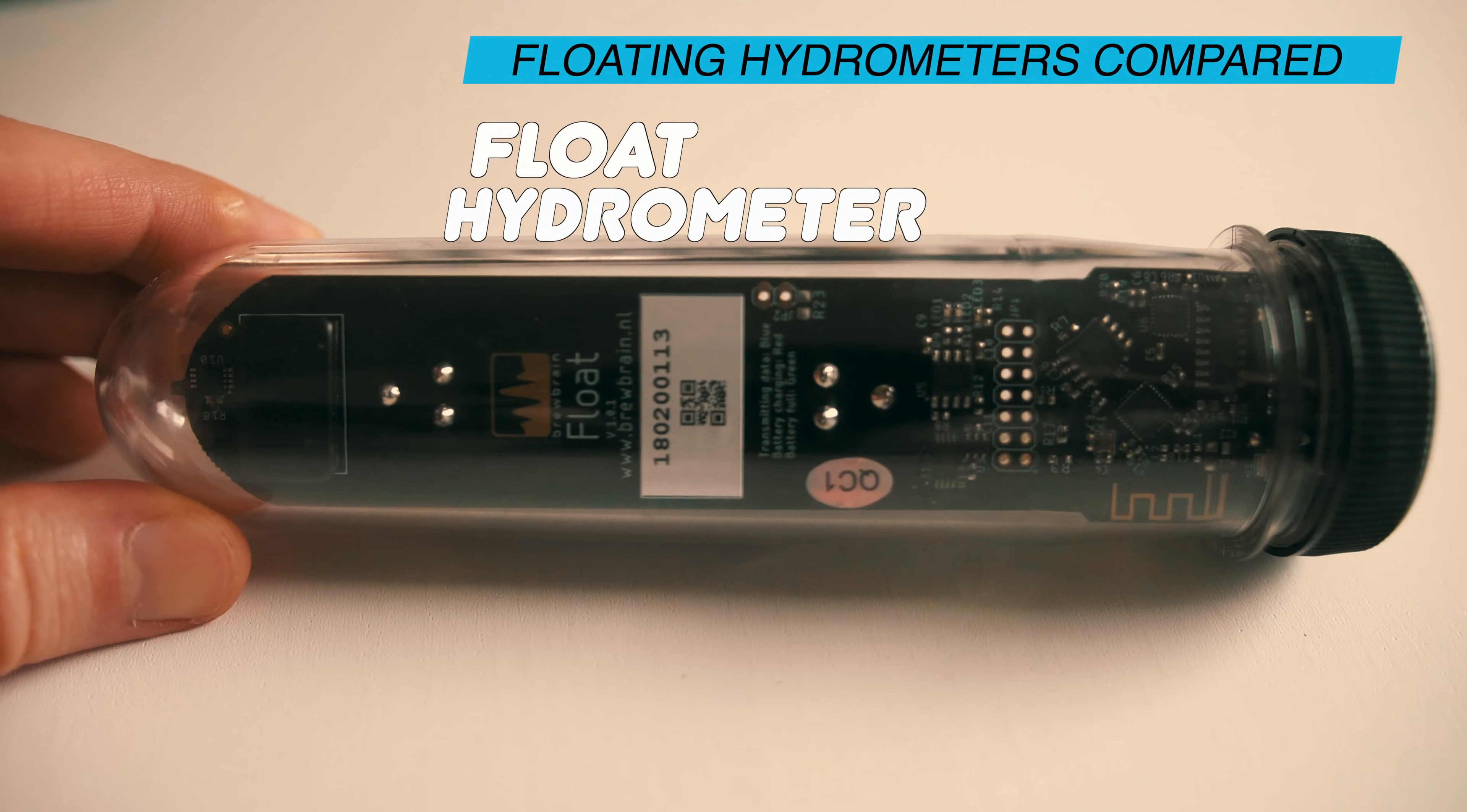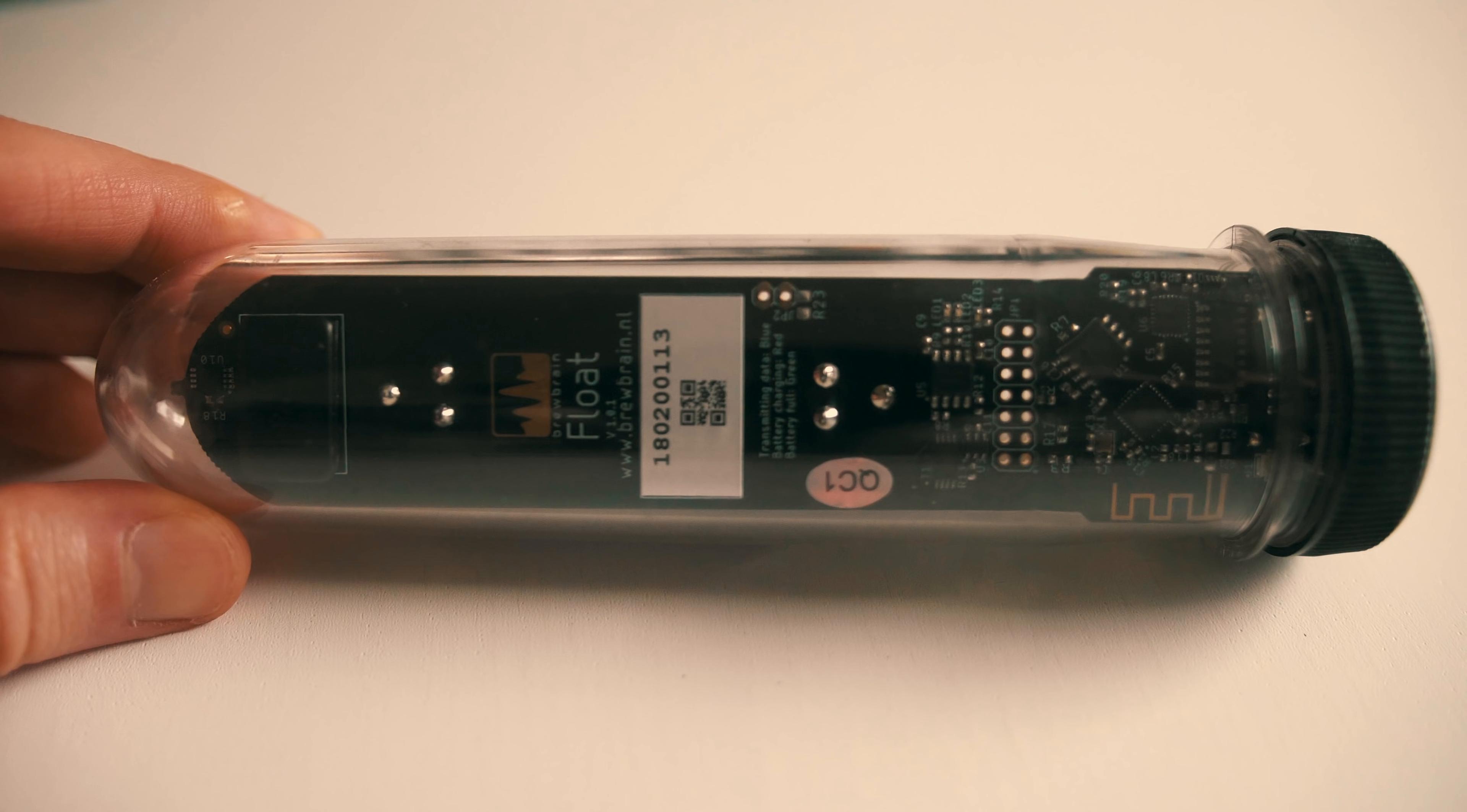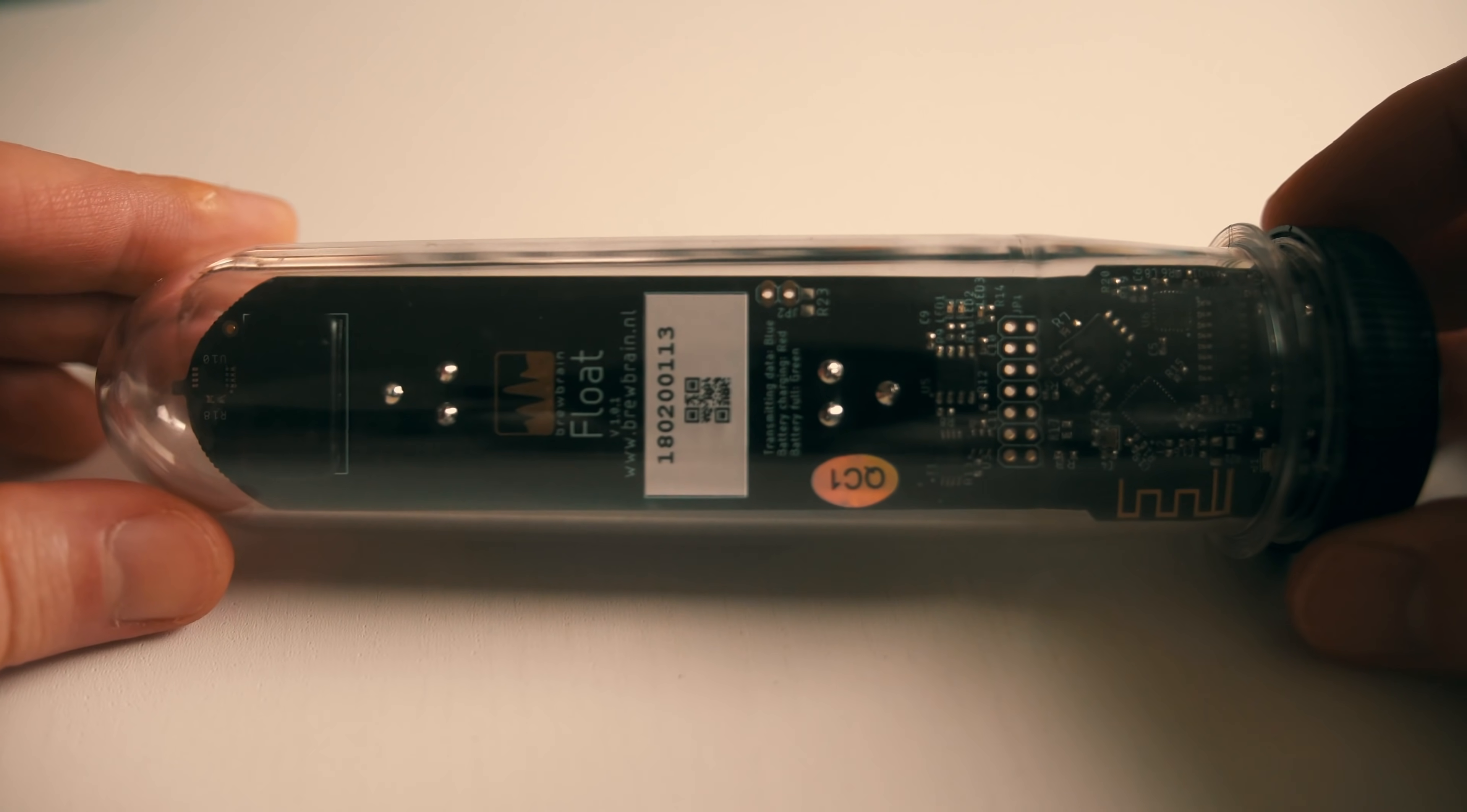Let's now move on to the float. The float is offered by a company called Brewbrain, who are based in the Netherlands, and this is the latest design of these three floating hydrometers. At this current point it is available in certain countries in Europe and the Nordics, but this could be different now depending on when you are watching this video, of course.